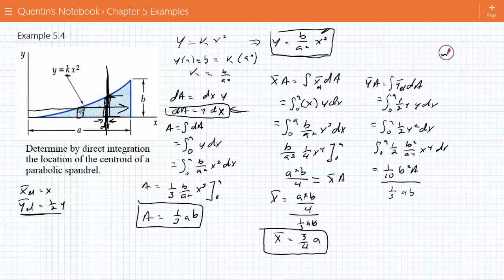So we're going to divide through by 1 third ab. Sorry, I switched A's. This needs to be little a, ab. The A's are going to cancel this time. One of the B's are going to cancel. And therefore, y bar is equal to 3 tenths b.